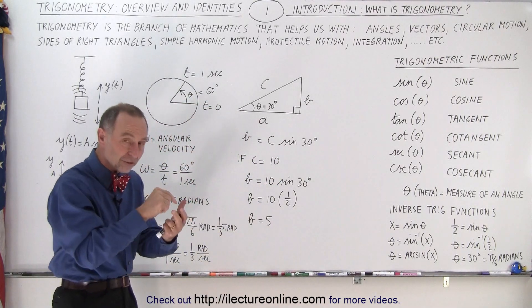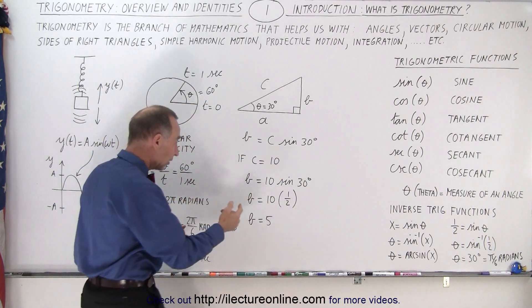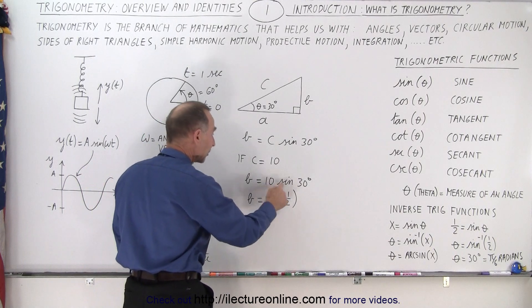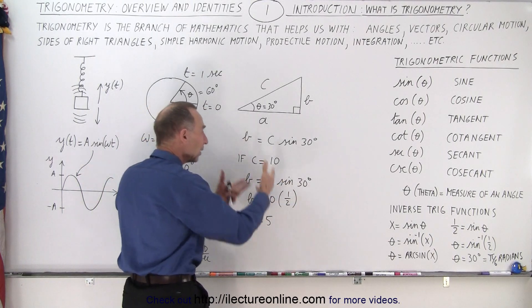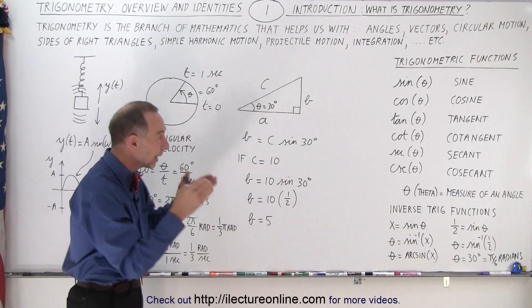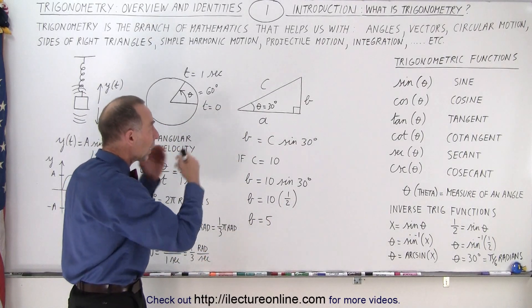Then B equals C times the sine of 30 degrees. We grab our calculator, punch in sine of 30 degrees. It comes out to be one half, so then 10 times one half gives us five.